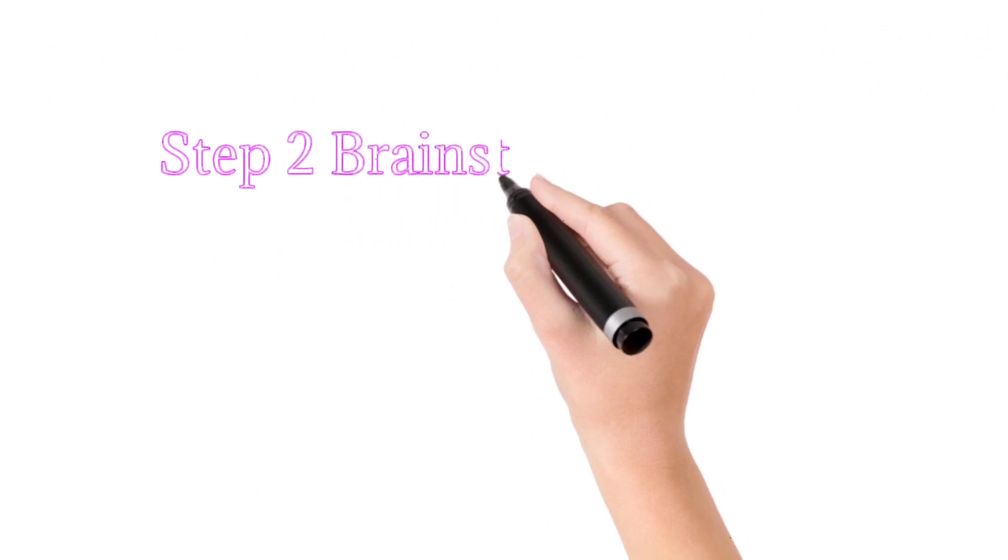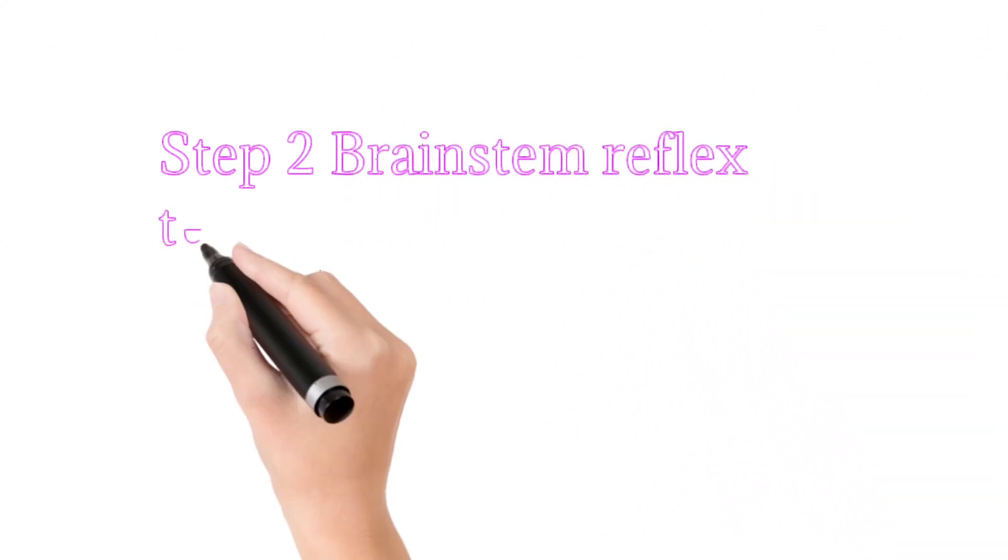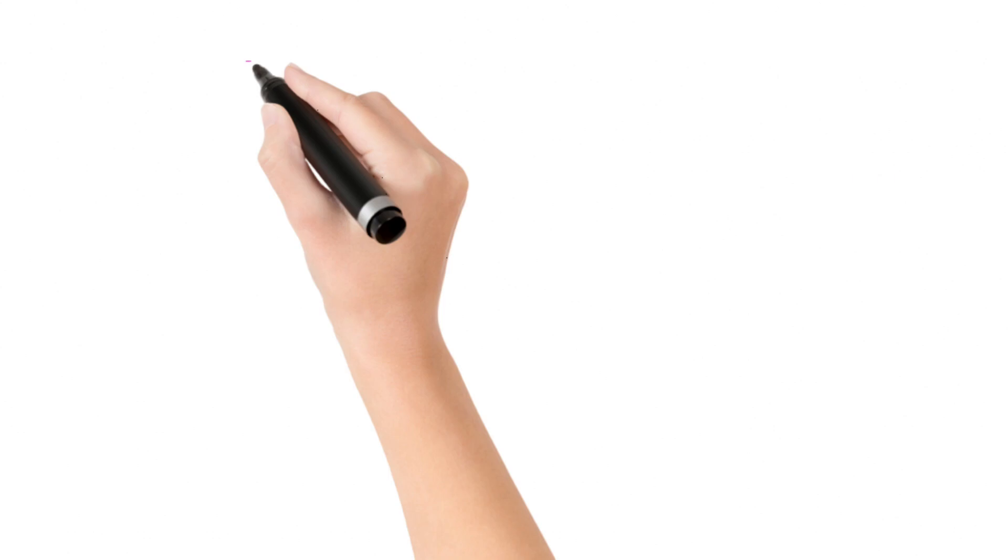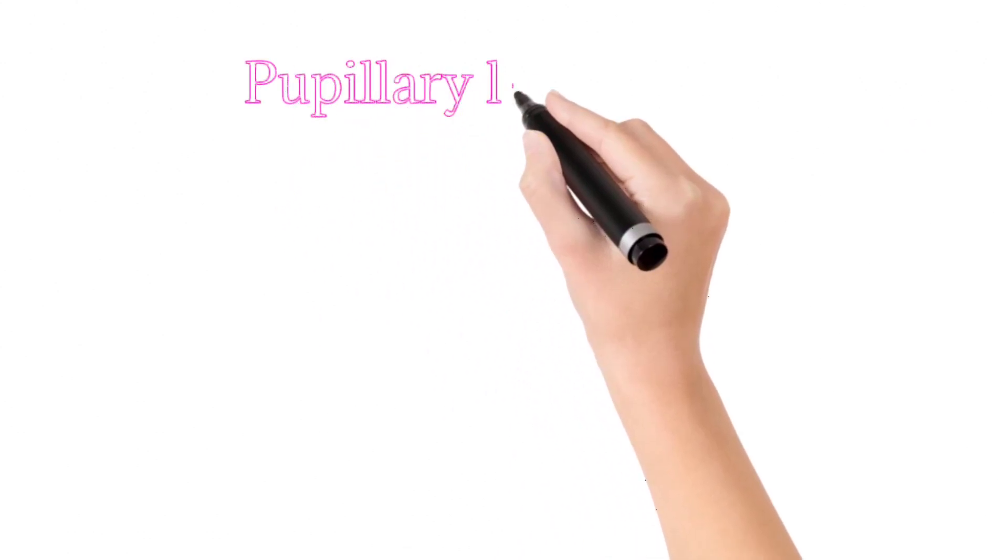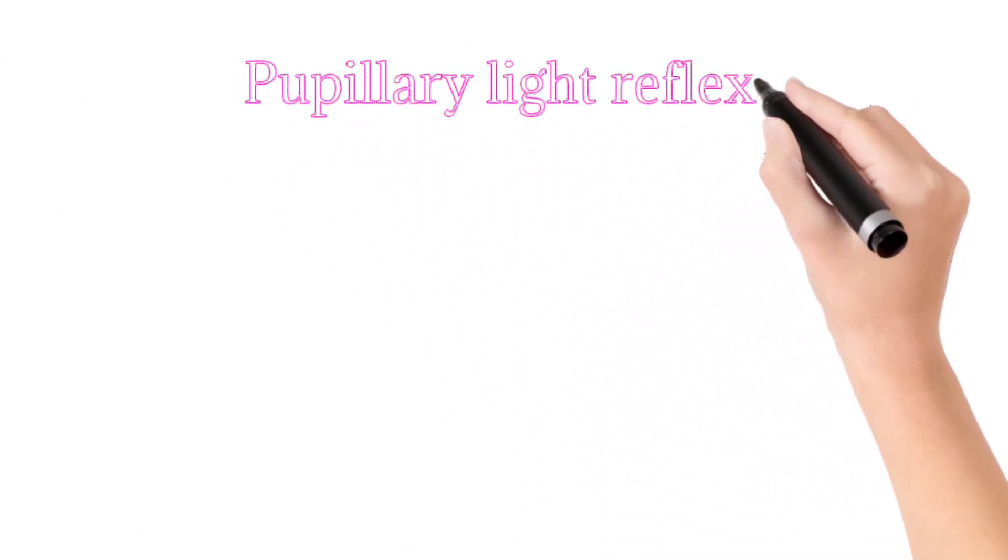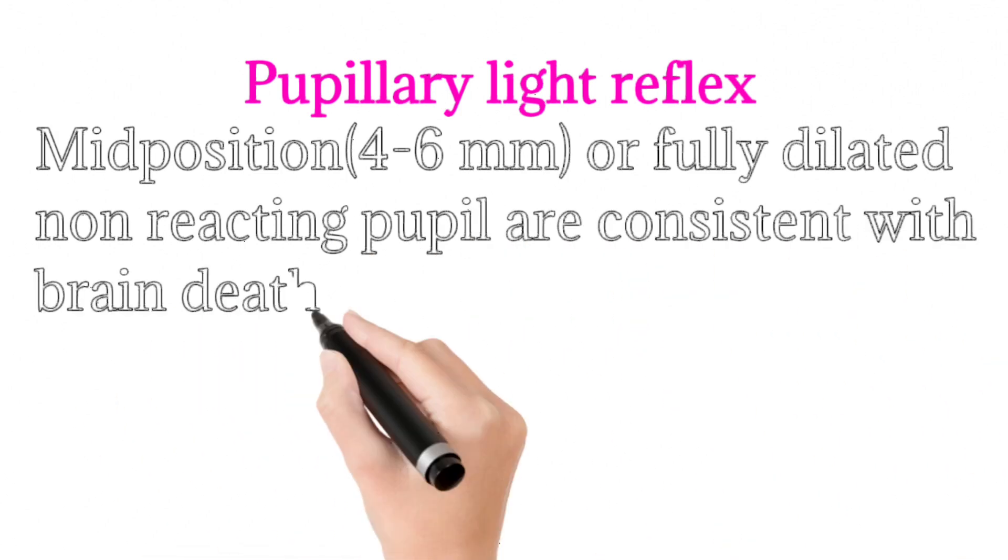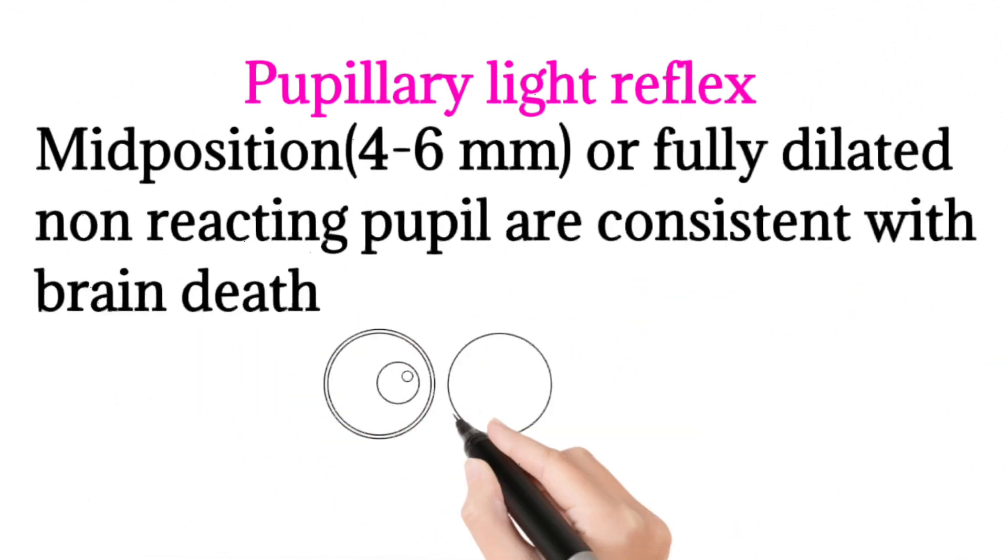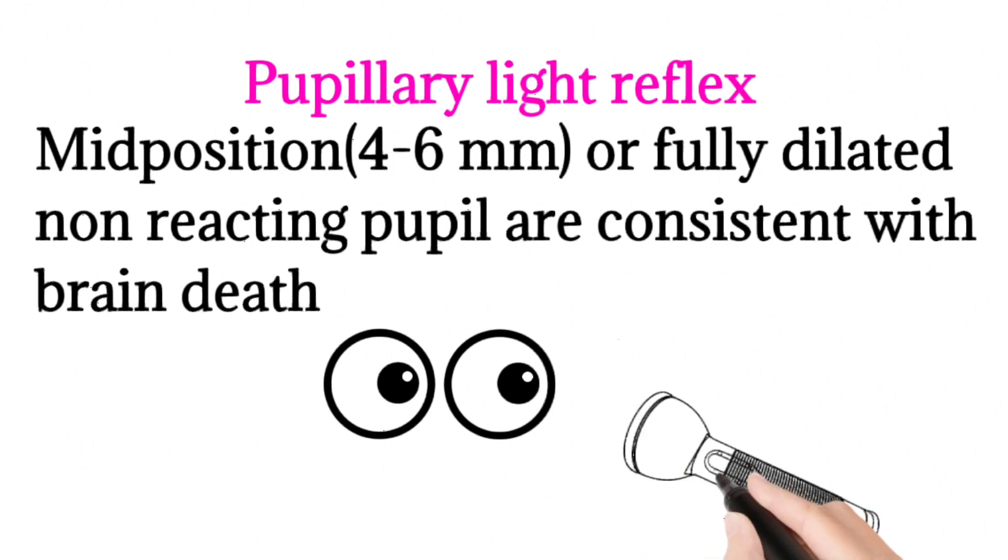Now we have step two: we do brain stem reflex test. First of all, we have pupillary light reflex. A mid position or fully dilated non-reacting pupil are consistent with brain death. Here we assess the function of cranial nerve second and cranial nerve third.